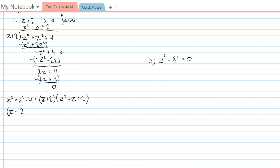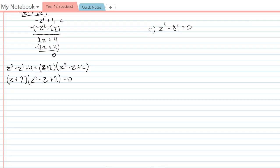So I might just write that: z minus two, whoops that was z + 2, multiplied by z² - z + 2 equals zero. So I'm going to factorize the quadratic factor now, and I'm going to do that by completing the square. I've still got the z + 2 at the front.